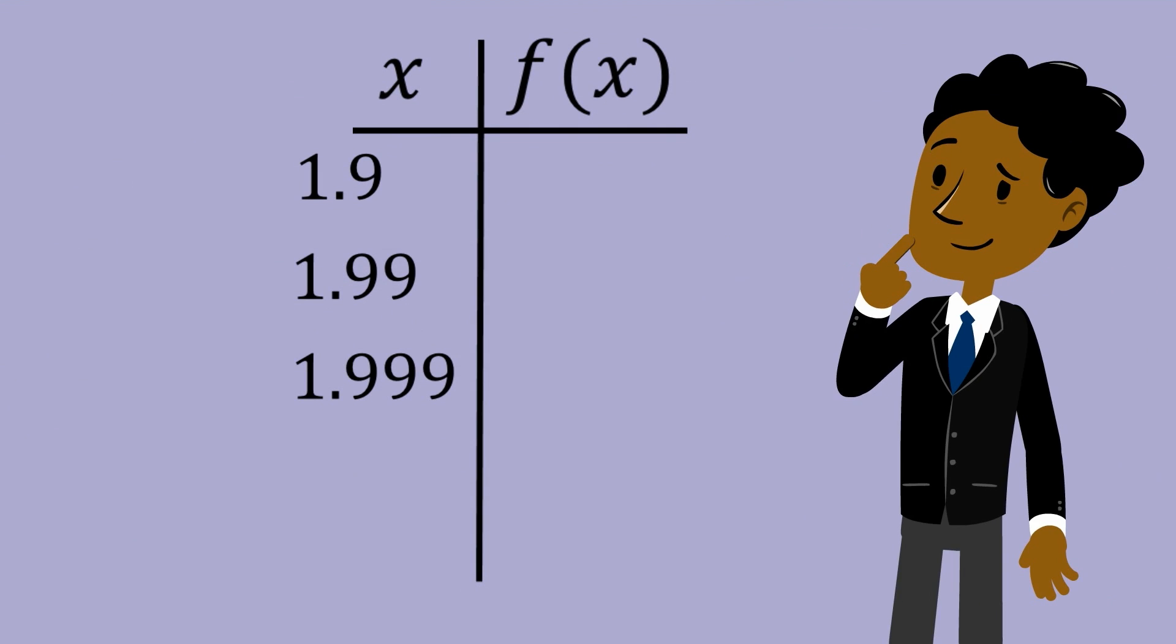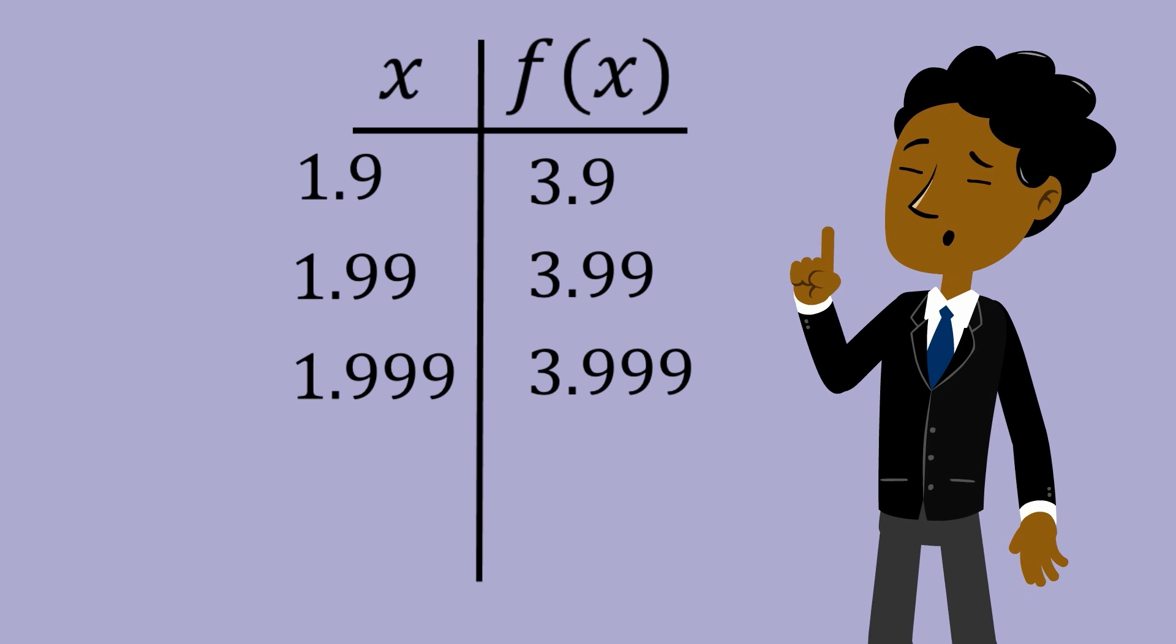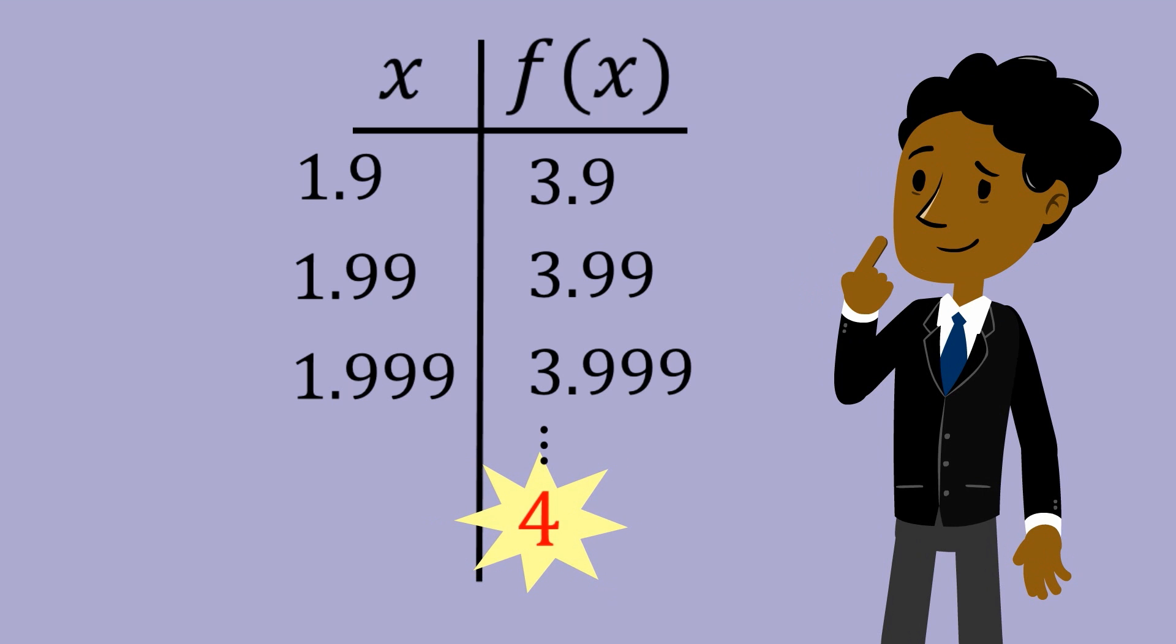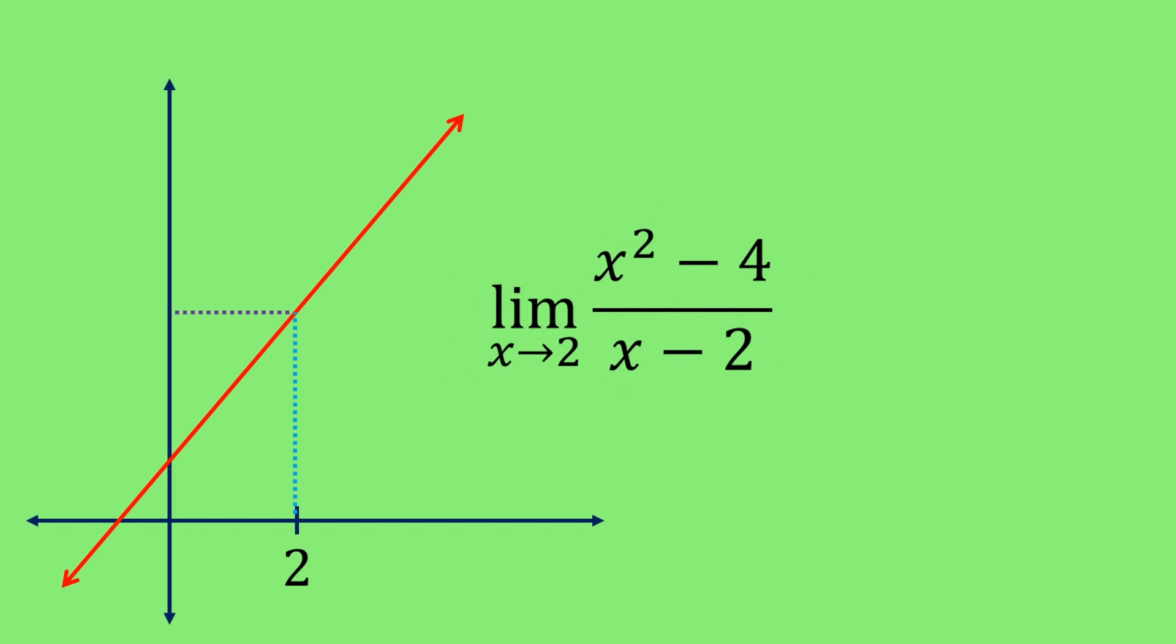When we use these, we get values of 3.9, 3.99, and 3.999. From these, it appears that the function is approaching 4. So again, we say that the limit of the function as x approaches 2 is 4.